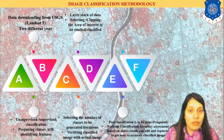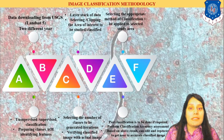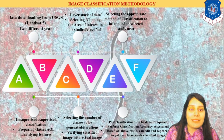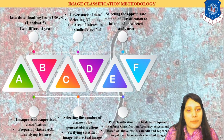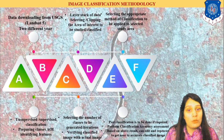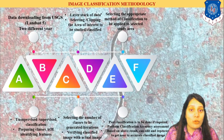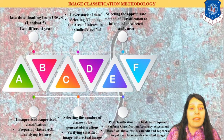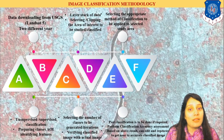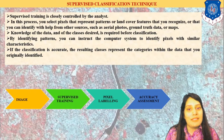There are two types of methodology. The first is known as supervised classification and the second is known as unsupervised classification. According to my study area, I apply the method by selecting the number of classes I want to assign. After doing the classification methodology, I perform post-classification analysis, and after that, I do the accuracy assessment of the classified image. This is the whole methodology we have discussed.